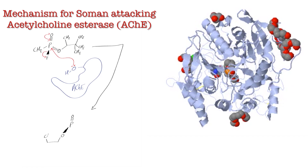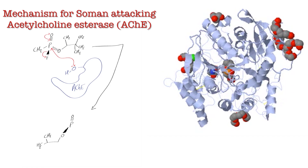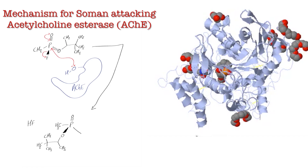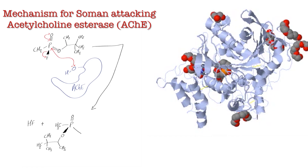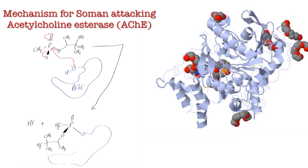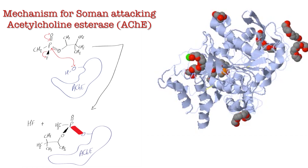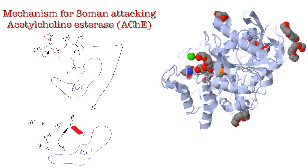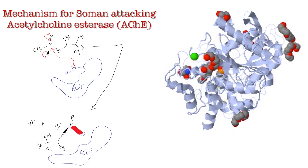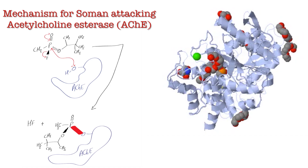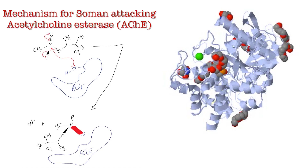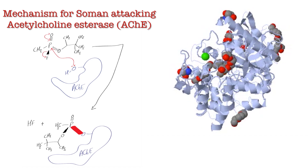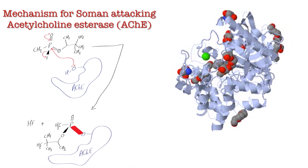If we look at the hydrolysis of SOMAN, which is a nerve gas, with acetylcholinesterase, you see that one of the amino acids — serine — attacks the phosphorus. In doing so, fluorine is released and you get a really strong covalent bond between that serine residue and the phosphate group.